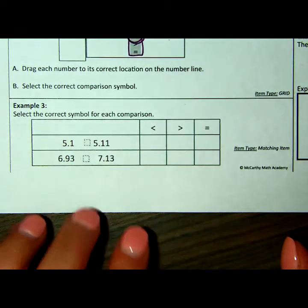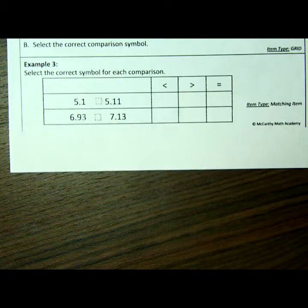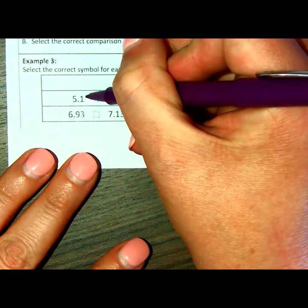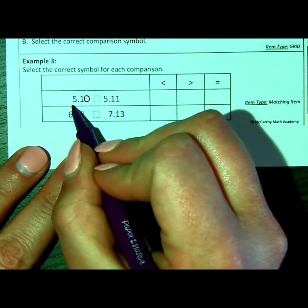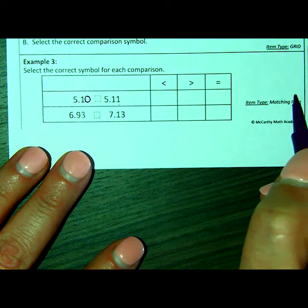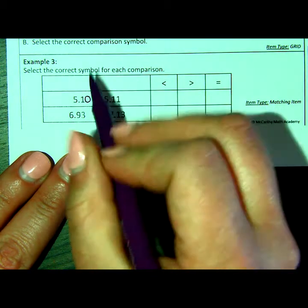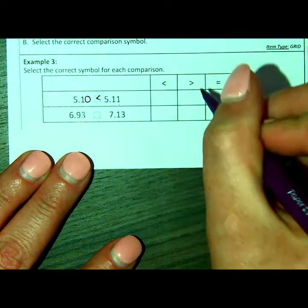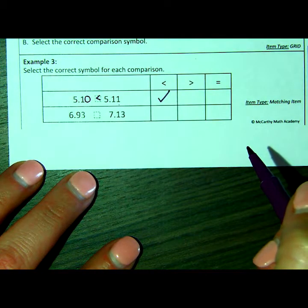Let's look at example three. We have to select the correct symbol for each comparison. So we have 5.1 compared to 5.11. Again, you can plug the zero in after, and then you know that's still equivalent. So do you want $5.10 or $5.11? You're completing the sentence, so you have to start from left to right. Read it just like you would a sentence. So $5.10 is less than, so you're going to put it in this box right here, $5.11.